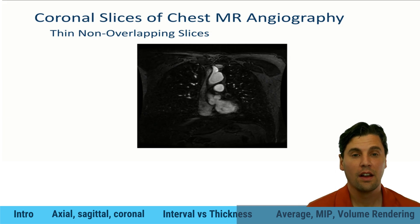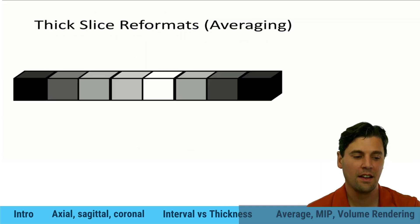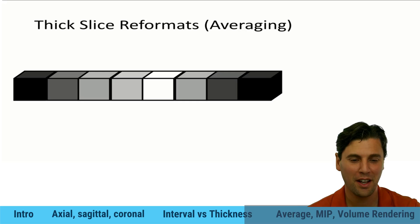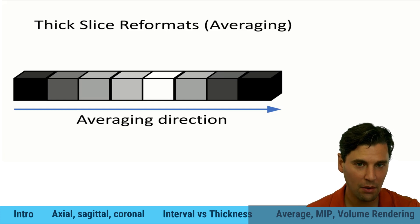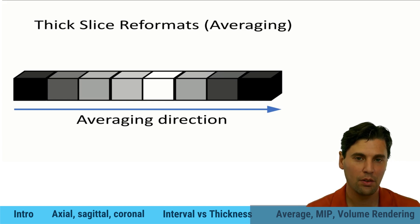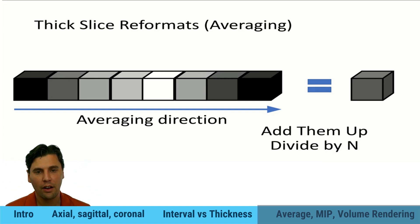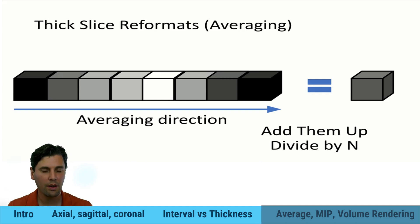This is a MR angiography case showing thin non-overlapping slices. If you haven't seen our video about averaging and MIP operations, we use marshmallows to make that one fun — check it out. The averaging operation is simple: in the direction we're taking the average, we take those voxels, add them up, and divide by how many there are. That's a great mechanism to reduce noise — if you have one tissue type with random noise, adding them up causes that noise to cancel out.